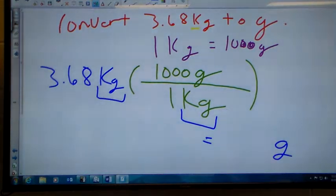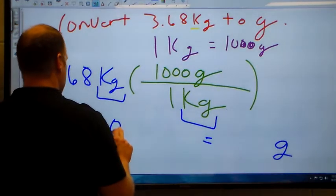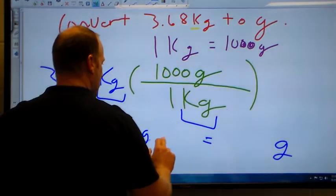So it would be 3.68 times a thousand divided by one, which would be three... it's almost like the one we just did. Three, six, eight, zero grams.